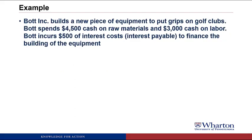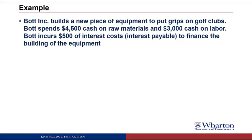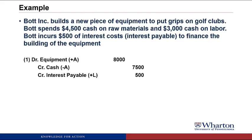What I'm going to do is go through an example in this video to highlight these different stages. Our example is going to concern Bot Incorporated, which manufactures golf clubs. Bot has built a new piece of equipment to put grips on the golf clubs. Bot spends $4,500 cash on raw materials and $3,000 cash on labor. They also incur $500 of interest costs under an interest payable to finance the building of the equipment. In the journal entry, we're going to debit equipment asset for $8,000, putting all of the costs into the asset balance. Those costs included $7,500 of cash cost, so there's a credit to cash — that's the raw materials and labor — and $500 of interest cost, so there's a credit to interest payable for $500.